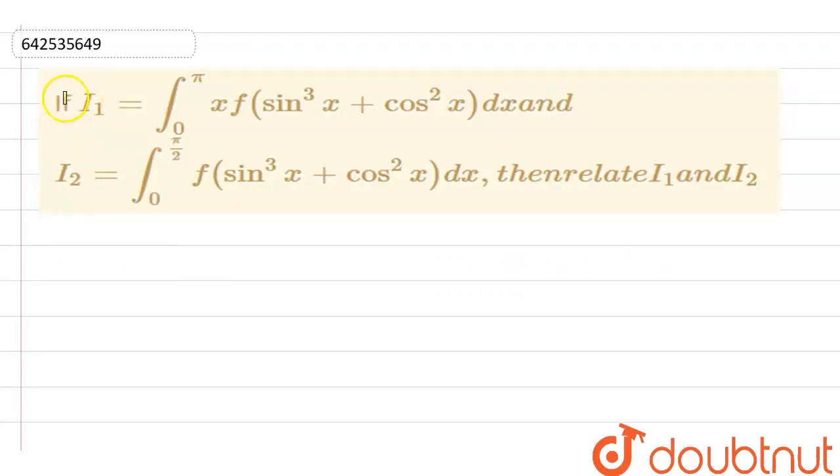Hello everyone, in this question we have: if i1 equals integration 0 to pi x f of sin cube x plus cos square x dx and i2 equals 0 to pi by 2, f of sin cube x plus cos square x dx, then relate i1 and i2.